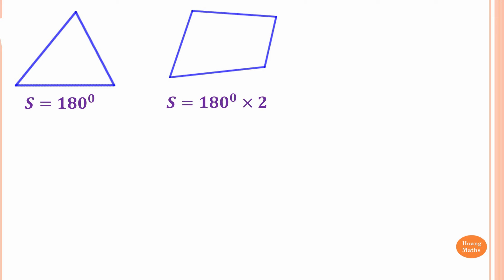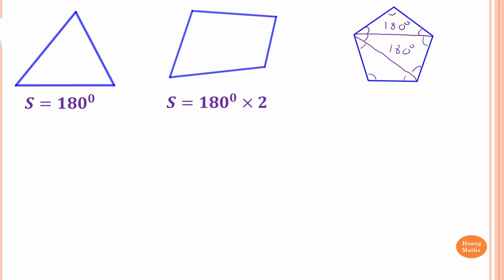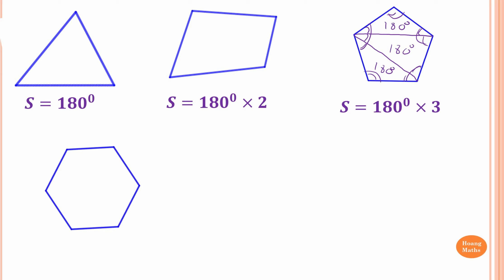We know the angle sum of a triangle is 180 degrees and a quadrilateral is 360 degrees. How about a pentagon? Let's work it out. I connect from this angle to this and from this angle to this, so now we have three triangles. Each set of angles adds up to 180 degrees, so the sum of angles of a pentagon is 180 times 3, which is 540 degrees.